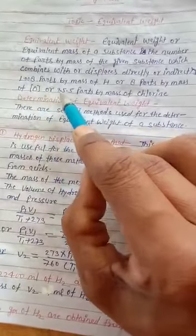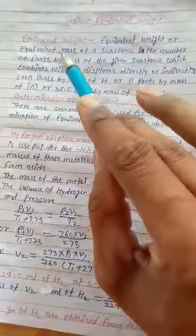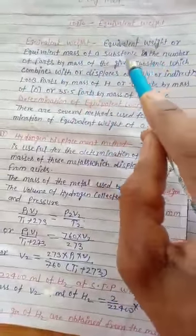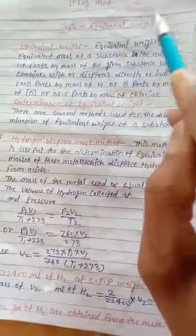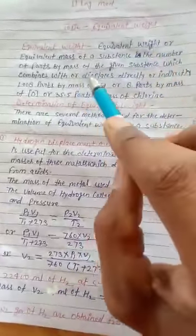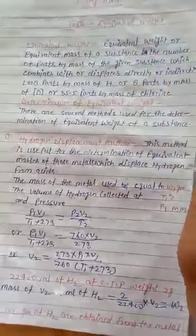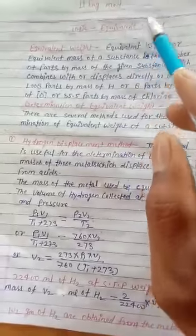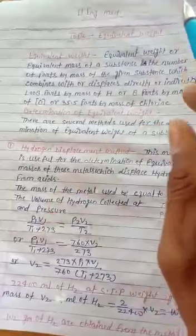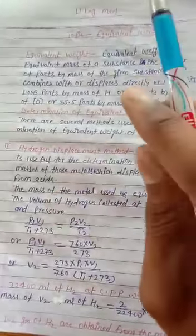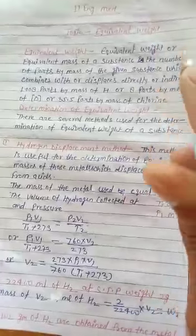Or 35.5 parts by mass of chlorine. Equivalent mass combines with or displaces directly or indirectly hydrogen, oxygen and chlorine: 1.008 parts by mass of hydrogen, 8 parts by mass of oxygen, or 35.5 parts by mass of chlorine.